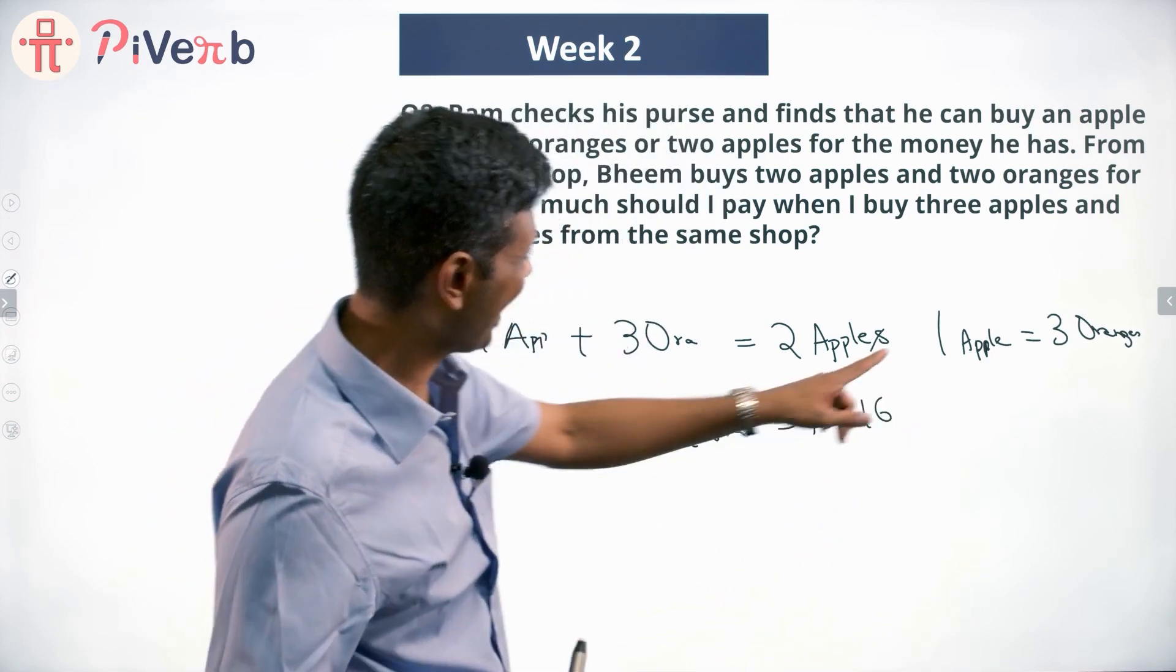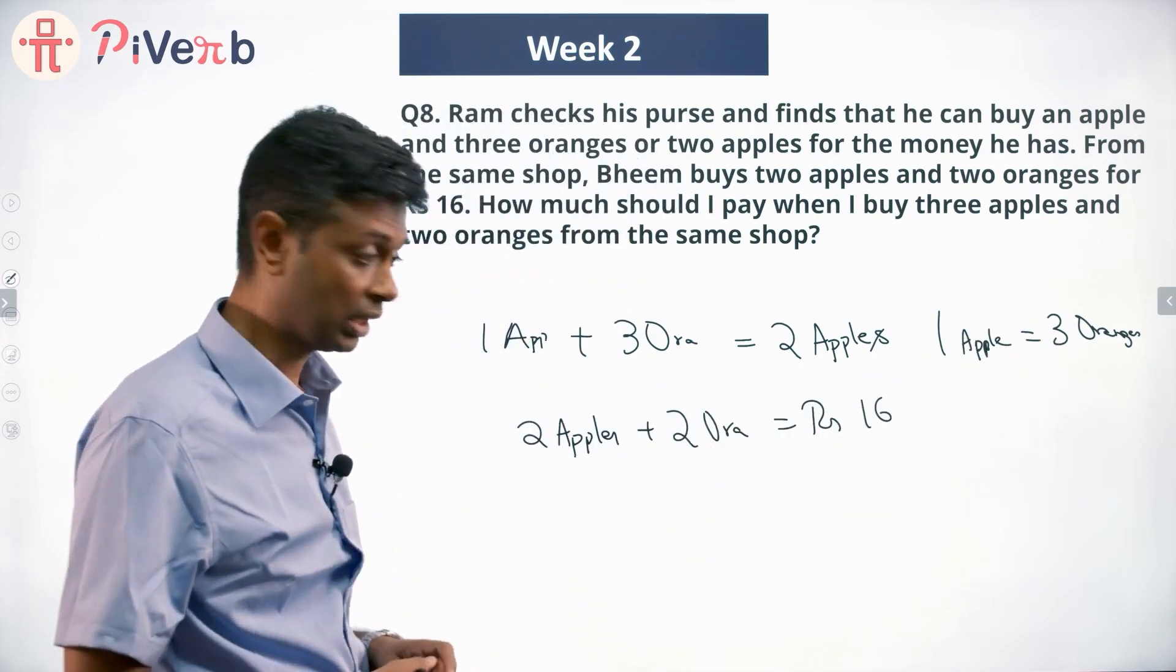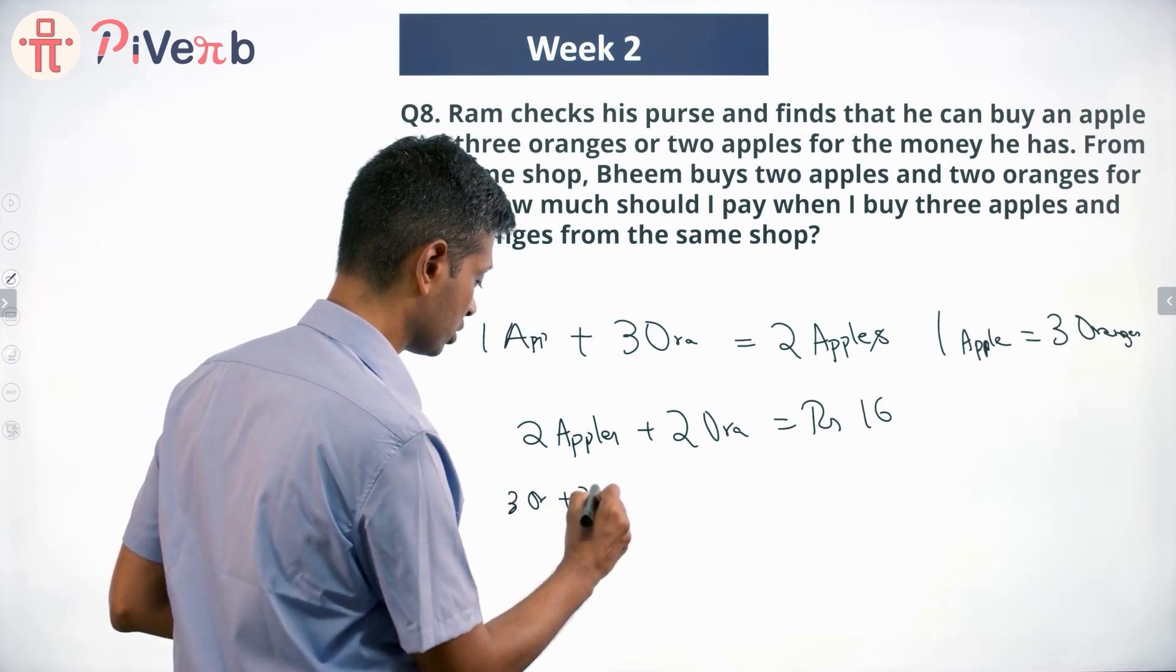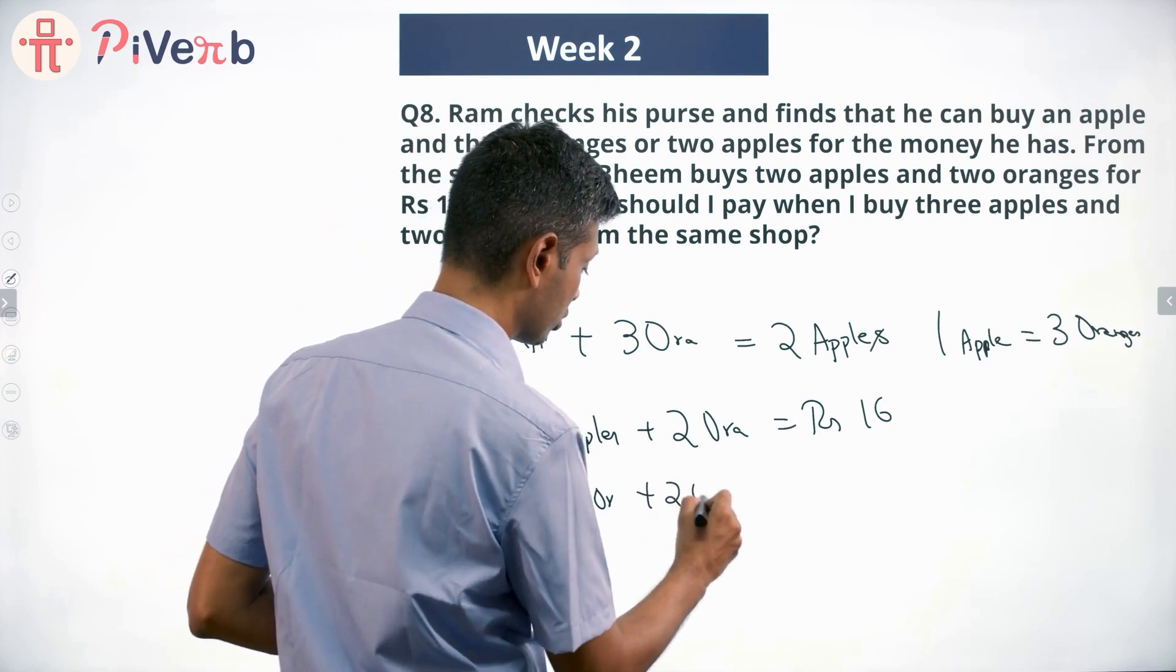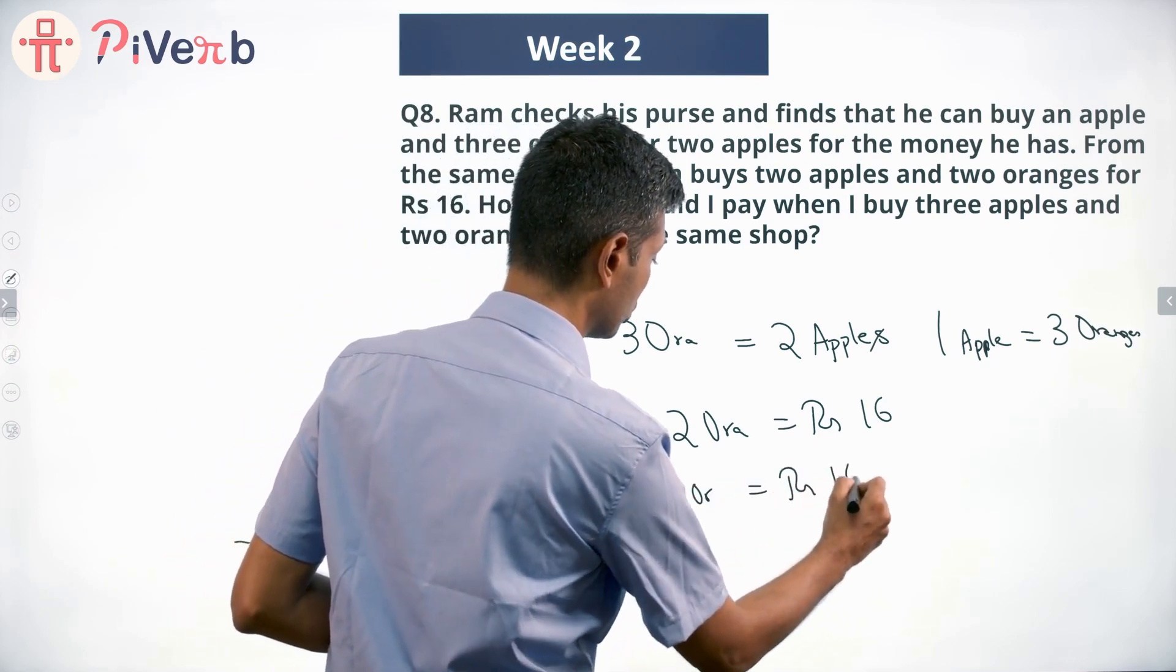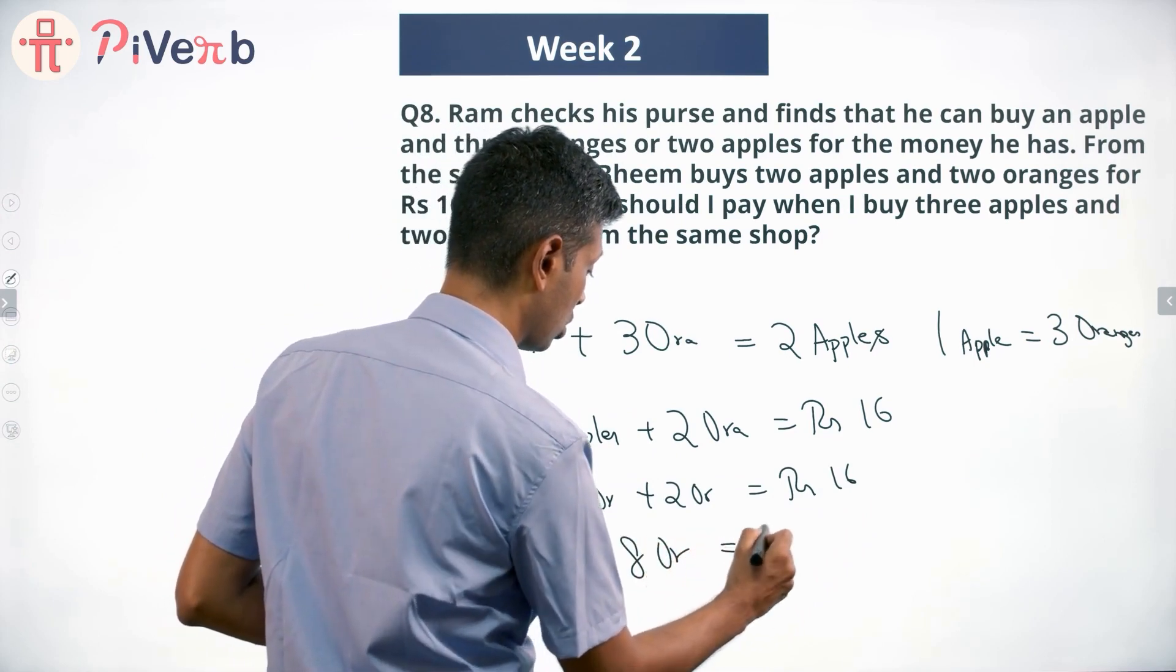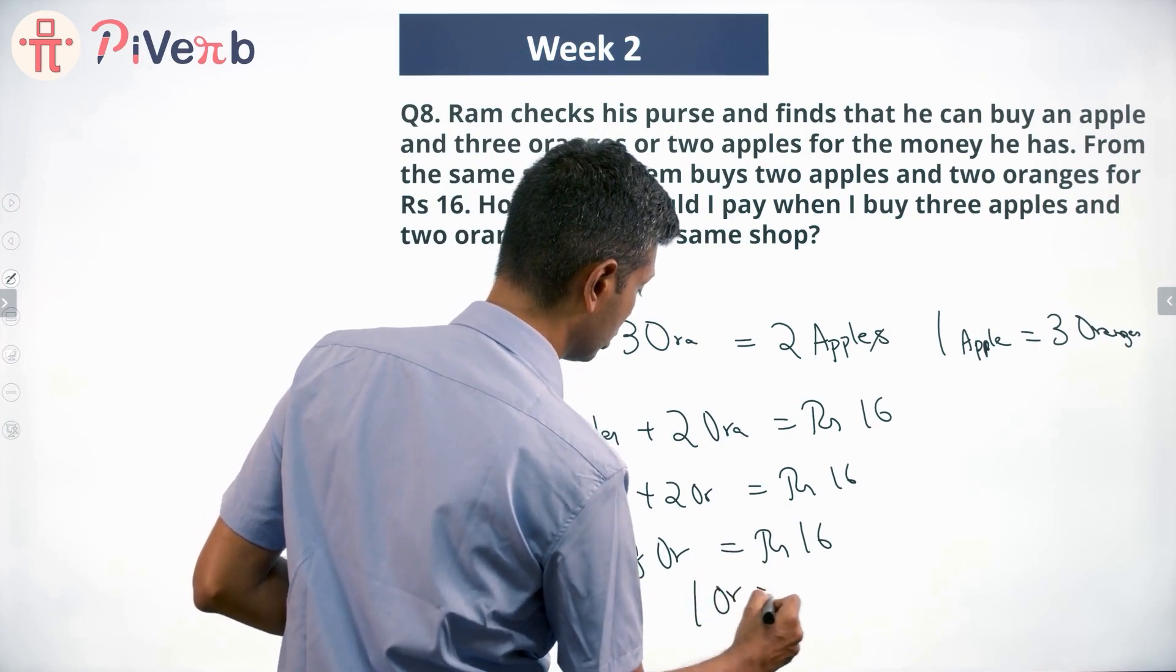We know one apple costs the same as three oranges. He's buying two apples - that will cost the same as three oranges plus three oranges. One apple he can replace with three oranges, plus two oranges. Plus two oranges - that costs rupees 16. Or three plus three plus two: eight oranges cost 16, or cost of one orange is...